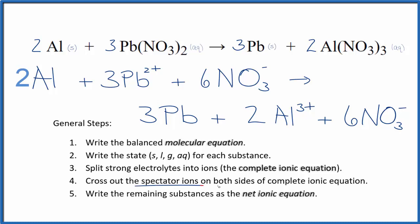Now we can cross out spectator ions. They're on both sides of the complete ionic equation. So the only thing that's the same here in the reactants and the products, that's these six nitrate ions. These are spectator ions, so we can cross these out since they're on both sides.